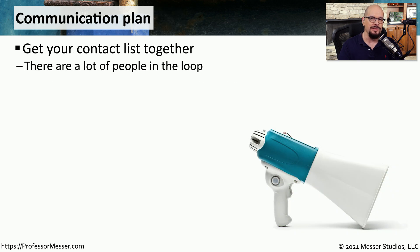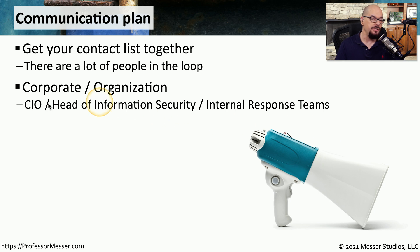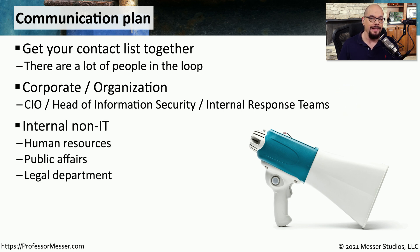Many of the problems during a high-stress event can be mitigated by simply having a good line of communication. If you are planning for a security event, you want to make sure your contact list is up to date with all current information so you can contact everybody who needs to be informed. In your organization, this could include your CIO, a head of information security, your internal response teams, and people outside IT such as human resources, your PR group, and your legal team.